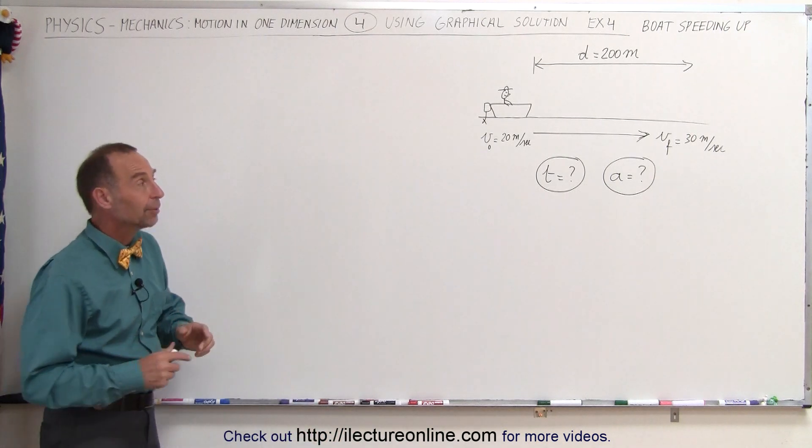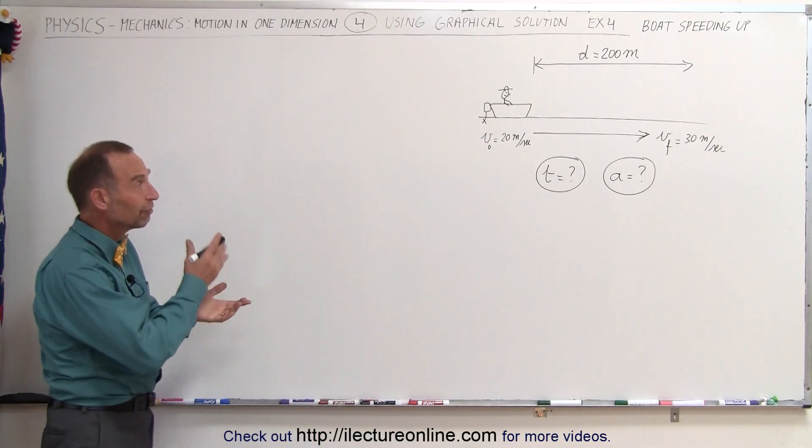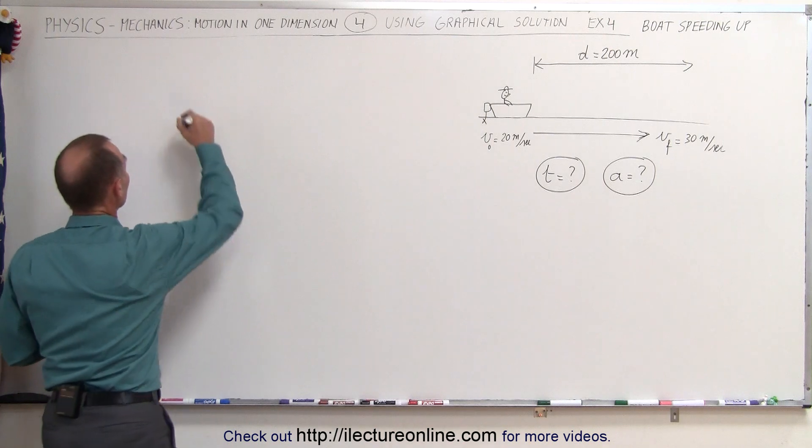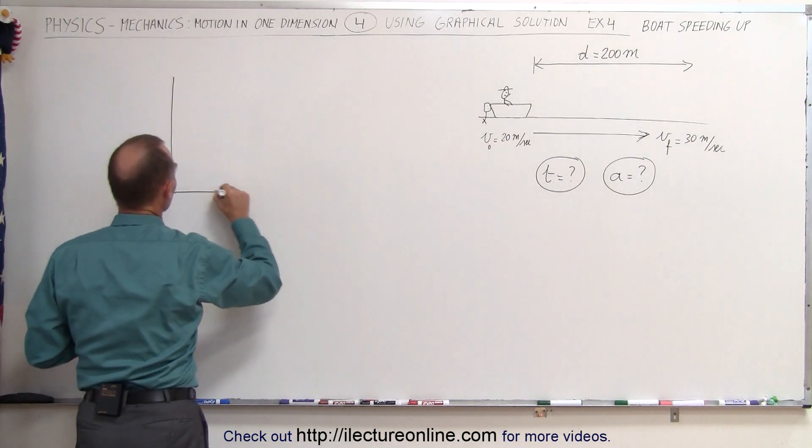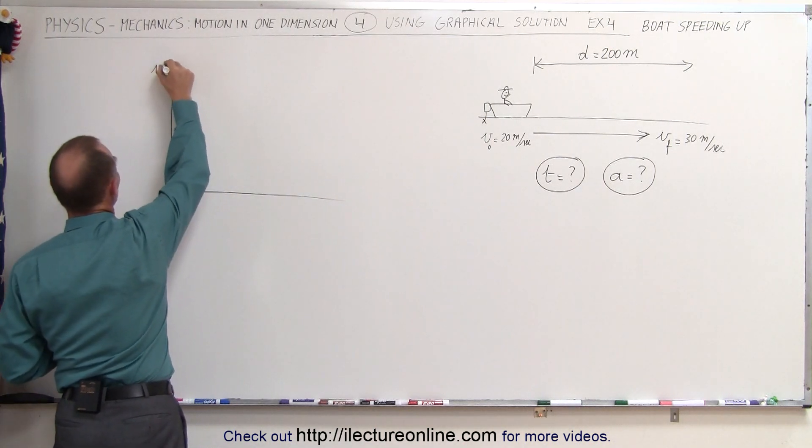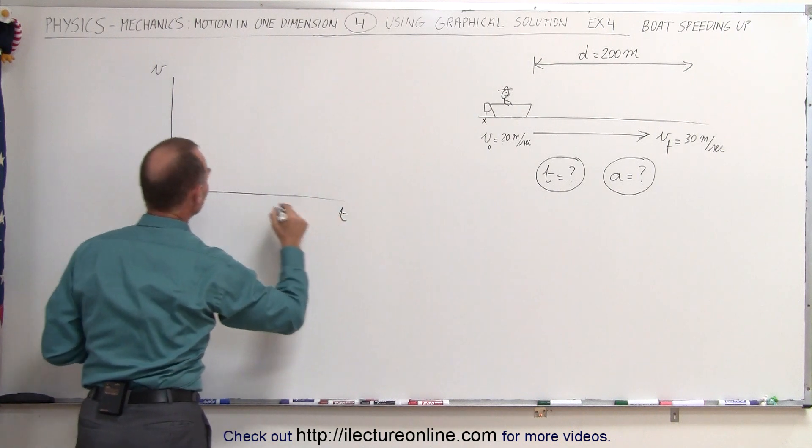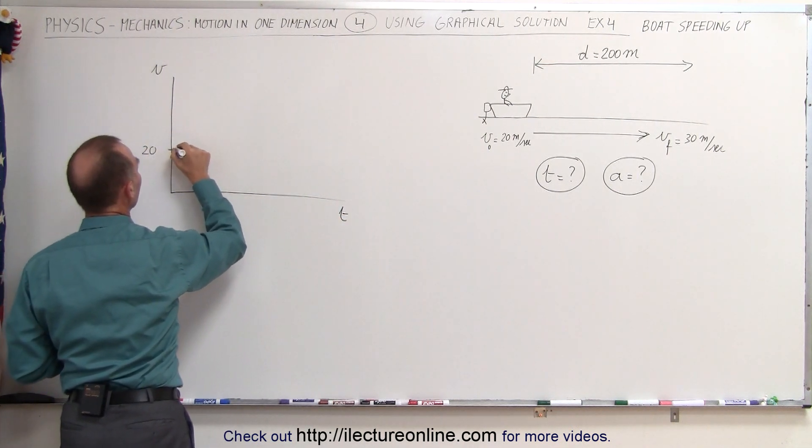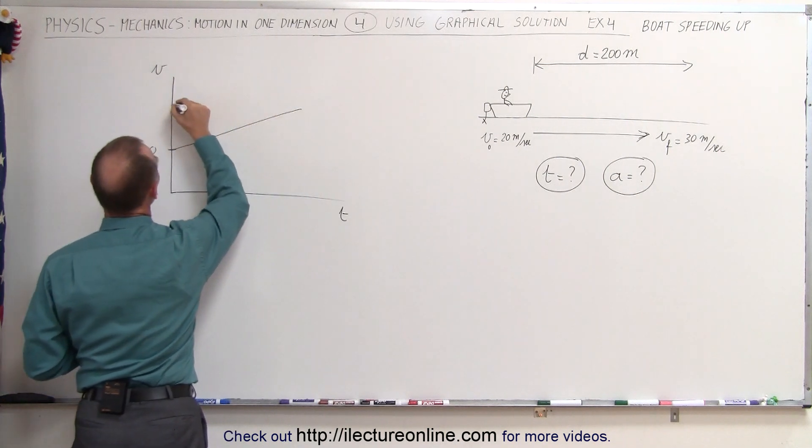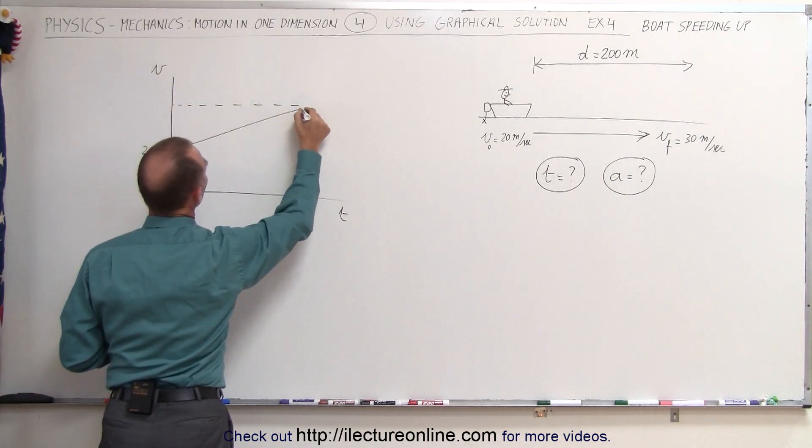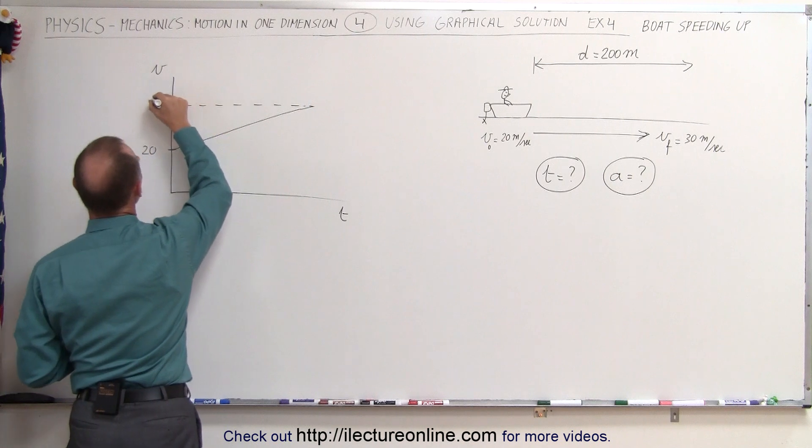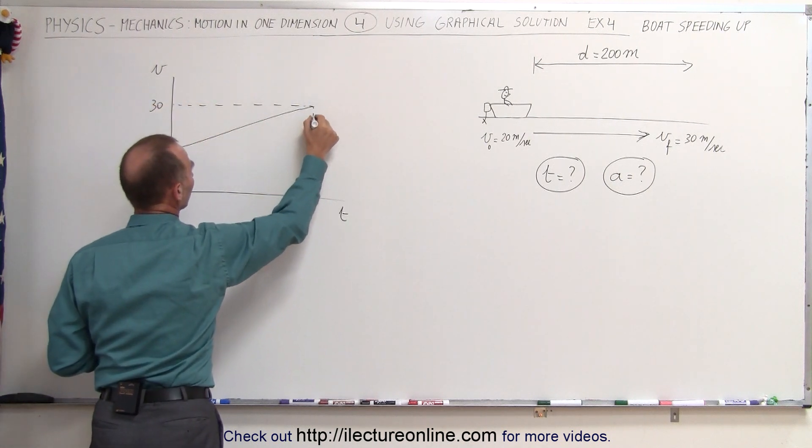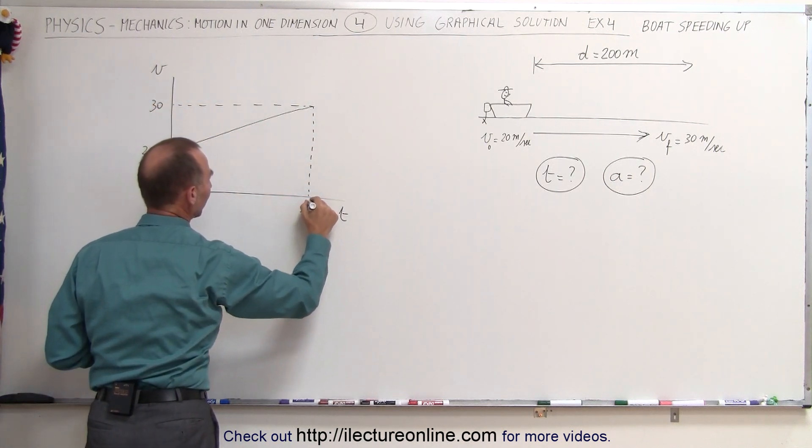Again we're going to do this in a graphical method. We're going to graph it using a velocity versus time graph. So when we draw a velocity versus time graph it looks like this. There's velocity, there's time starting at 20 meters per second and then speeding up at a constant acceleration all the way up to 30 meters per second over a certain amount of time we don't know. We'll call it t.